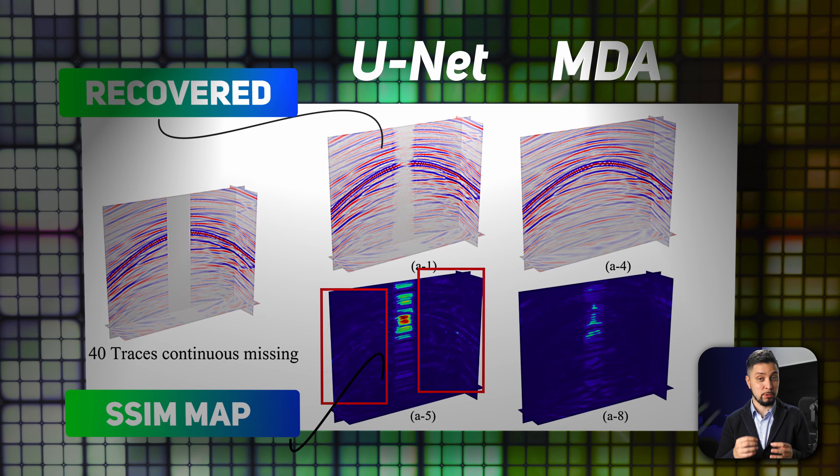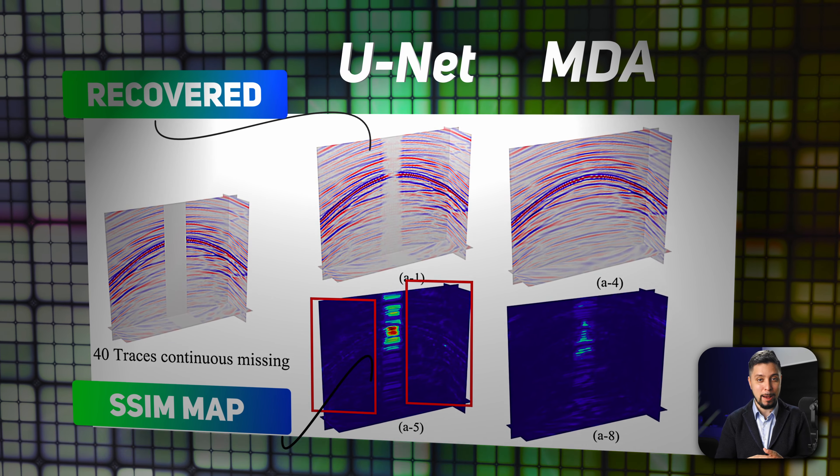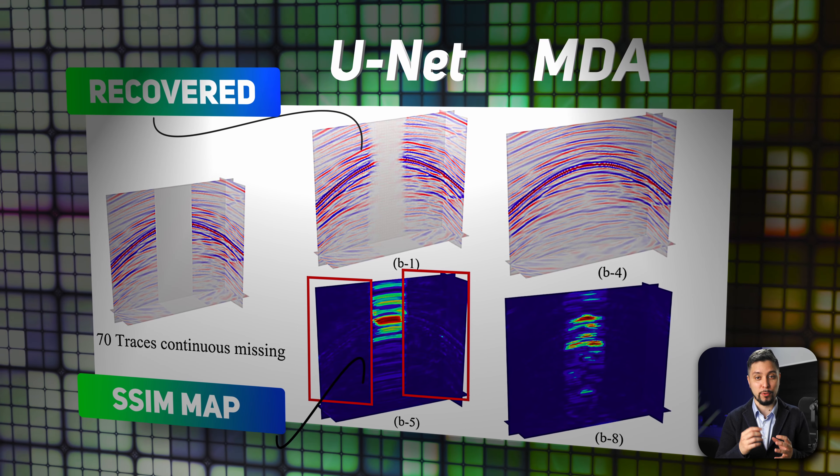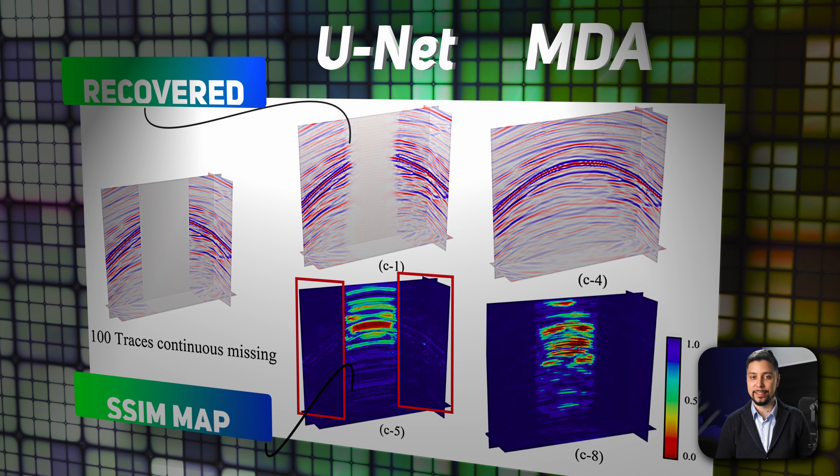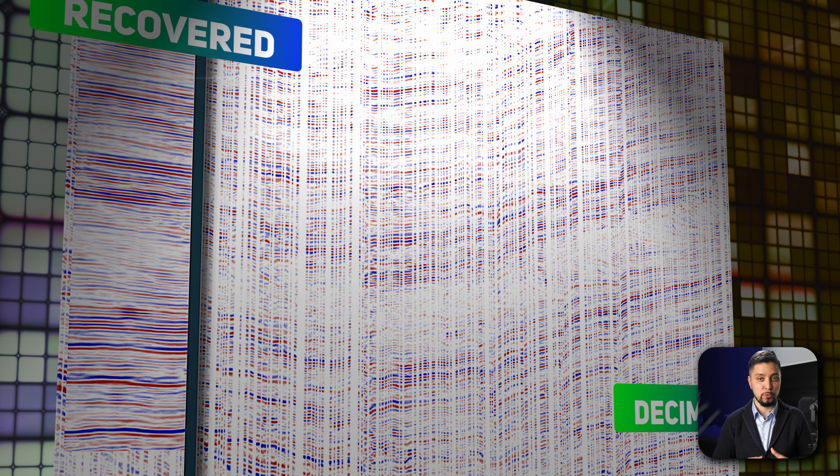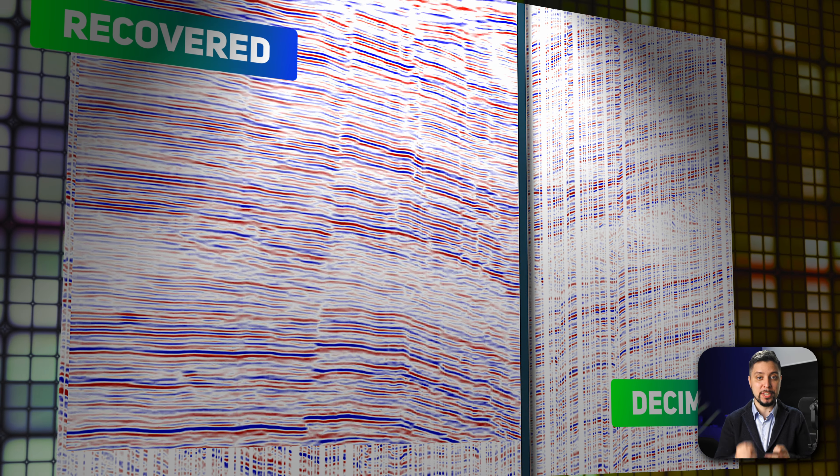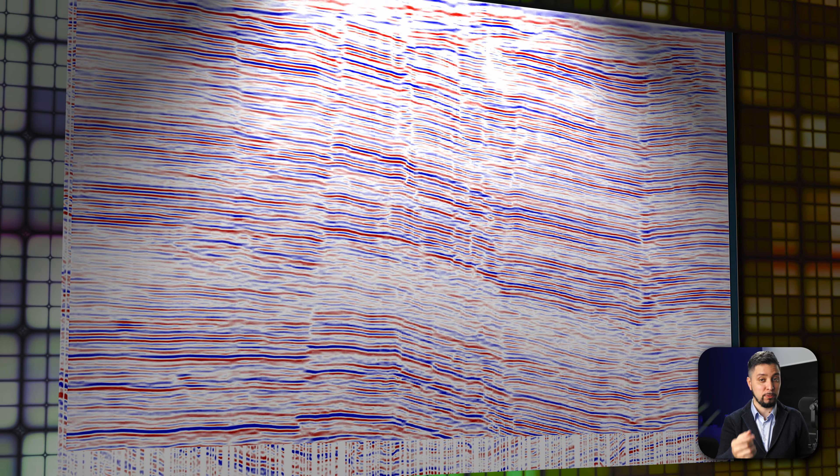MDA showed improved reconstruction quality, handling up to 95% of random discrete missing and 100 traces of continuous missing data. For example, in the Kerry dataset, MDA managed to fill gaps and reconstruct missing folds where U-Net fell short.